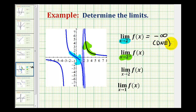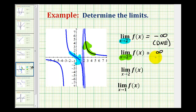As we approach positive two from the right side, notice how the function increases without bound. Therefore, the y values increase without bound and approach positive infinity. So the right-sided limit is equal to positive infinity, which again does not exist.